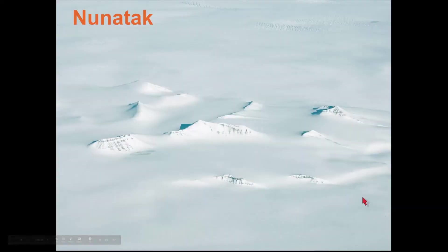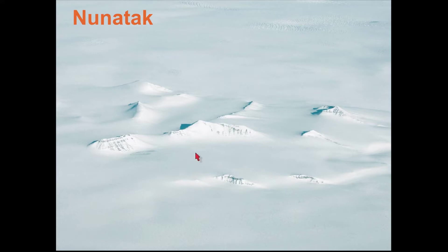Nunatak is a fun word — it refers to the tips of mountains that stick up above an ice sheet. The ice could be a thousand to two thousand meters thick, and these could be incredibly high mountains, but because of the thickness of the ice sheet, you can only see the top part — that's a nunatak.